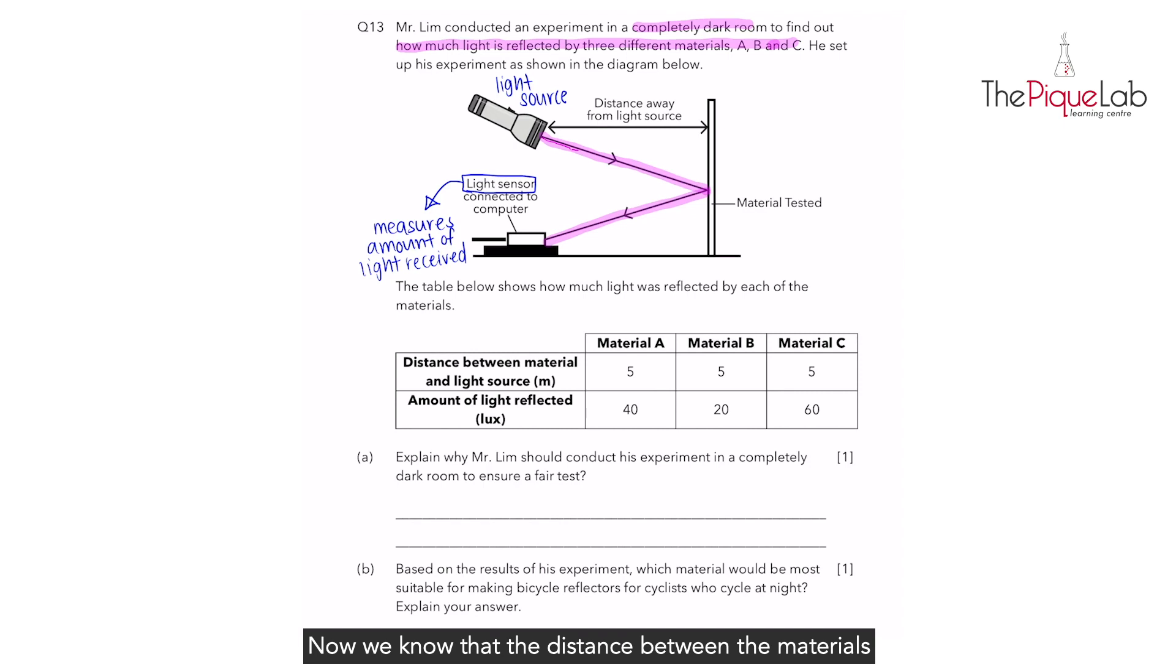We know that the distance between the materials and the light source were kept the same at five meters each. They were also given the result which is the amount of light reflected and it is measured in this term we call lux. What is lux? Lux may also be a new term to some of the Primary 4 students. We would just say that lux is actually the unit for light. Just like how meter or centimeter is the units for length, lux is the units for light.